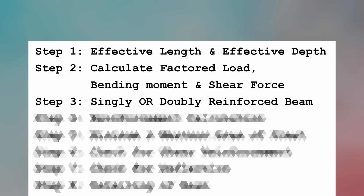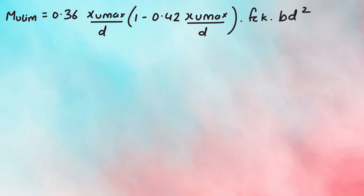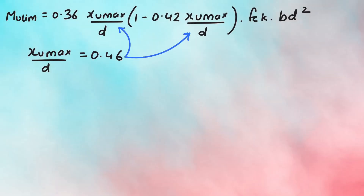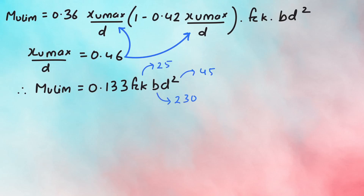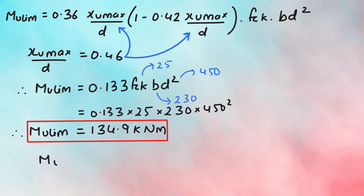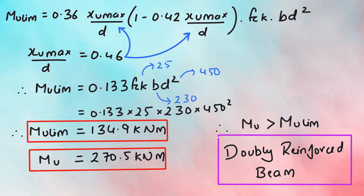Step 3 is checking if the beam is singly or doubly reinforced by referring to NXG 1.1c and calculating the limiting moment. The value of XUmax by D is found from notes of Section 38.1 for different grades of steel. Since we have used Fe500, substituting the value gives MU limiting as 0.133 × FCK × B × D². Substituting the values of FCK, B, and D gives a limiting moment of 134.9 kN·m. Since the limiting moment is less than the applied moment of 270.5 kN·m, the beam needs to be designed as a doubly reinforced beam.